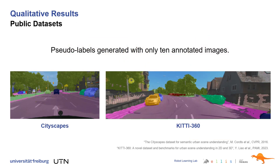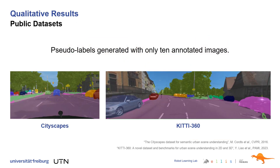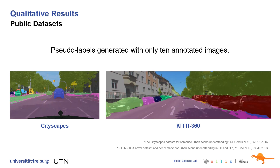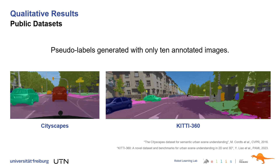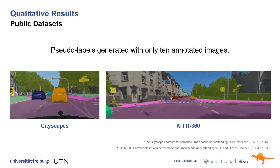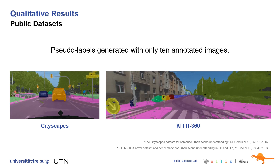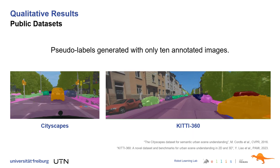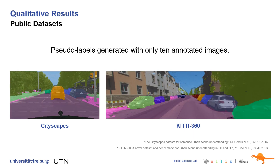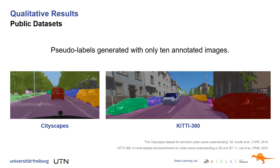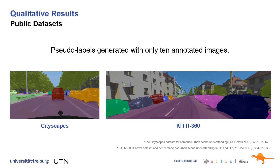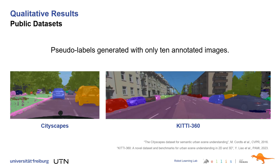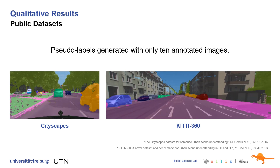In these videos, we visualize our panoptic pseudo-labels for both Cityscapes and KT360. Please note that we used only 10 annotated images to train our entire framework, including the DINOv2 backbone and the task-specific heads of our panoptic pseudo-label generator.